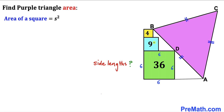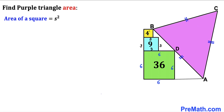Now let's focus on the blue square whose area is 9. So 9 equals s squared, and the side length turns out to be 3 units across the board. Finally, the yellow square has area 4, so 4 equals s squared, and taking the square root, the side length of the yellow square turns out to be 2 units.